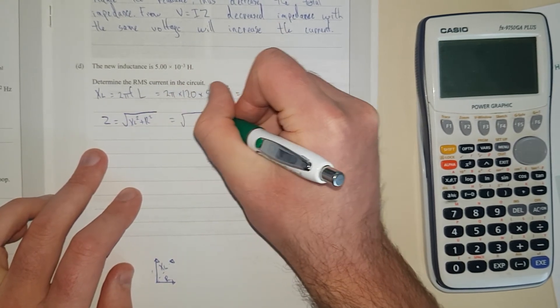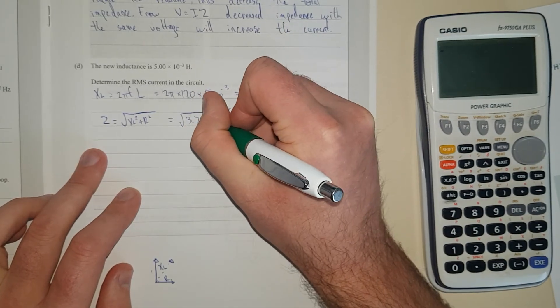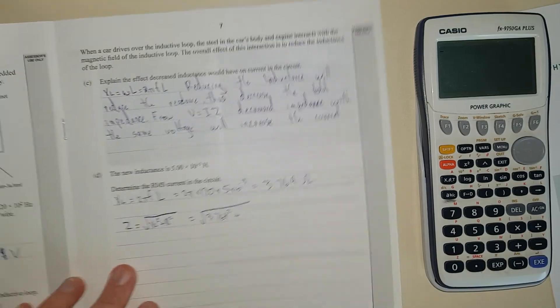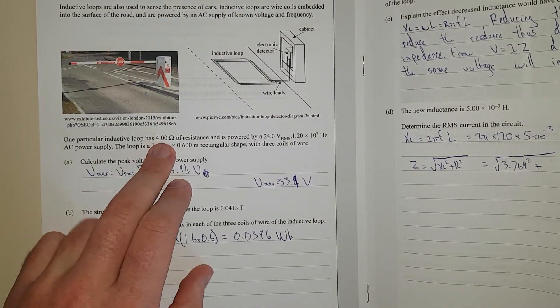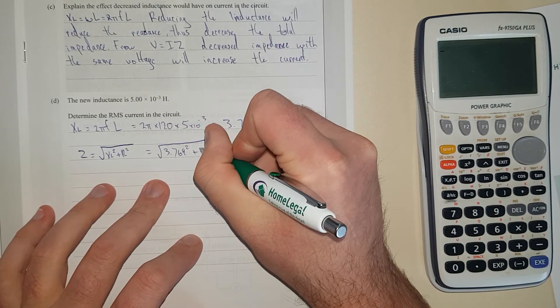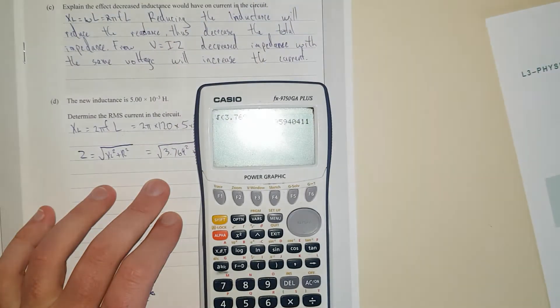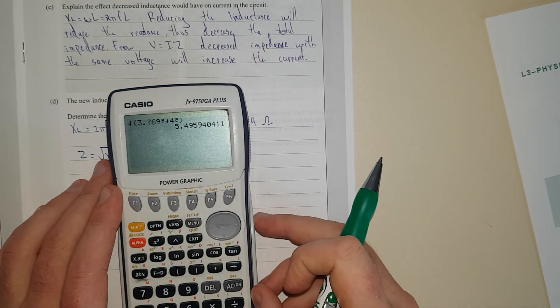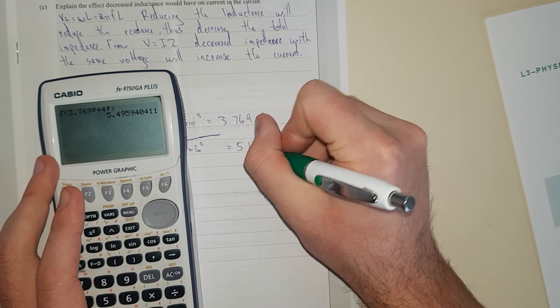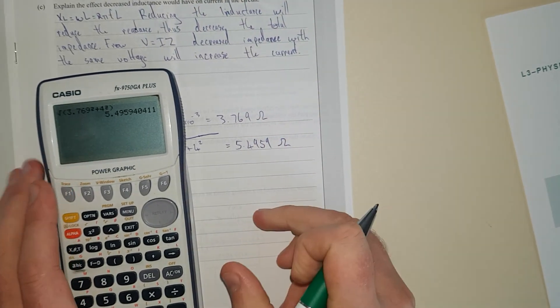That equals square root of 3.7699 squared plus 4 squared (the resistance of the loop is 4 ohms). And that equals 5.4959 ohms. That's the total impedance of the circuit.